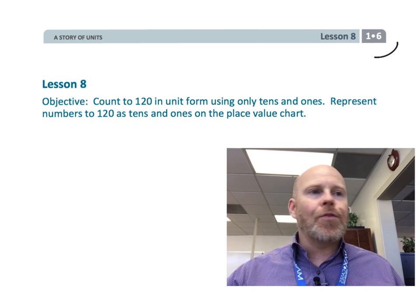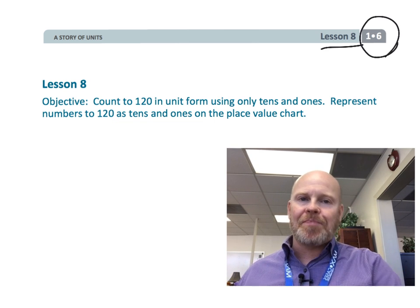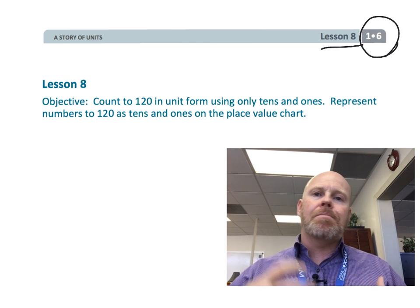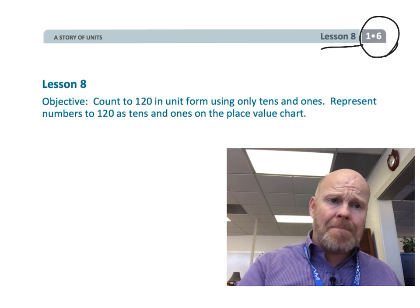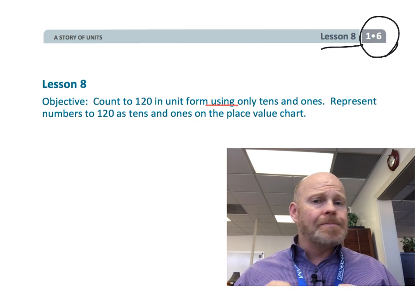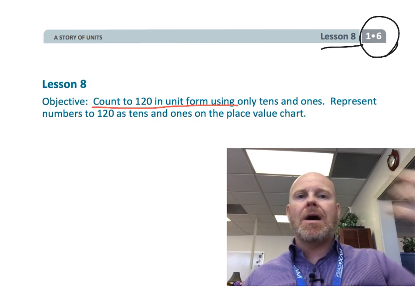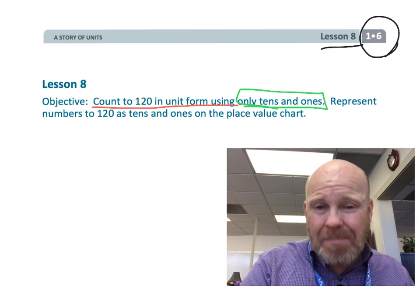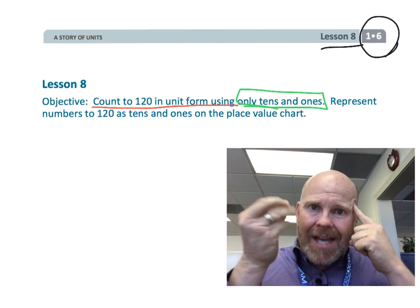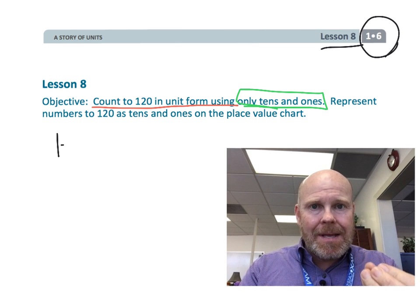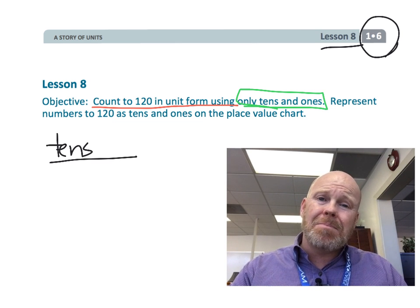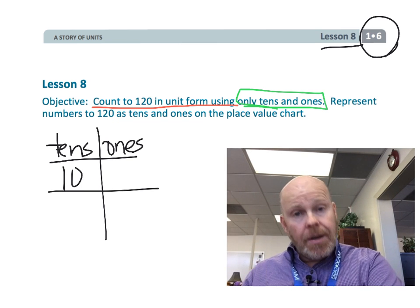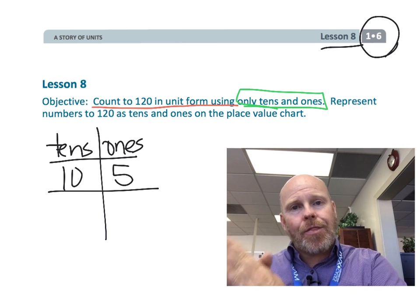Alright, this is first grade, module 6, lesson 8. In this lesson, students are going to be continuing to practice their counting up to 120. The idea is, when we get beyond 100, we're going to be using only 10s and 1s, meaning we want students to connect 100 to 10 tens. So when we're filling things into the place value chart, we're going to use 10 tens rather than 100. So we're not going to go into that third place value column.